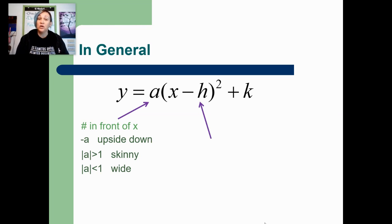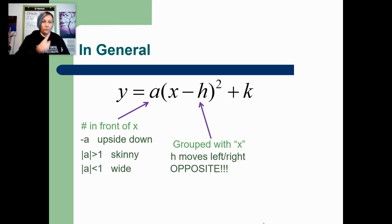Then we have the letter H, which will always be somehow attached to the letter X. So it should be grouped inside of some parentheses with the letter X. And the letter H tells us if it shifts to the left or the right. But because it's being subtracted, it's going to go in the opposite direction of what you think. Remember, also yesterday we learned the trick where you can just take the whole parentheses and set it equal to 0 and then solve for X. And that will give you your axis of symmetry.